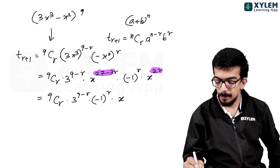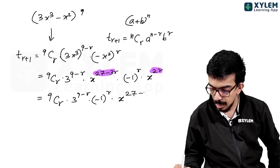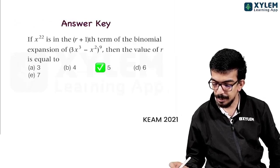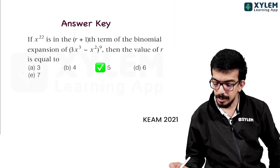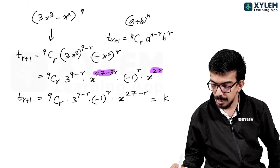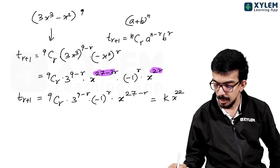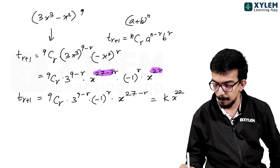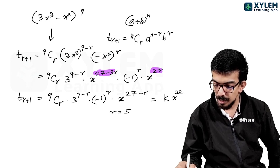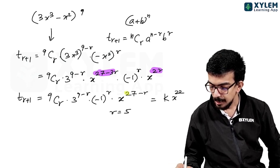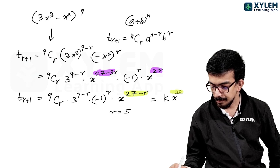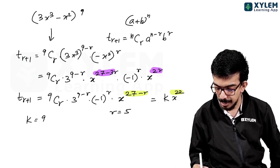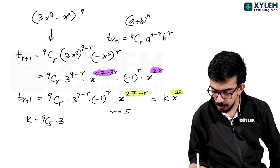Adding the powers: 27 - 3r plus 2r gives 27 - r. That is the power of x in the (r+1)th term. Since x is raised to 22, we set 27 - r equal to 22 and solve for r.